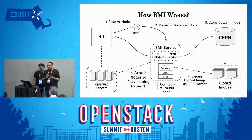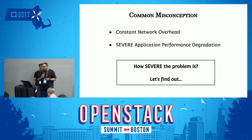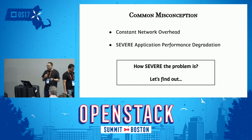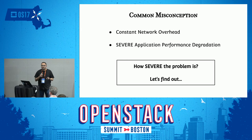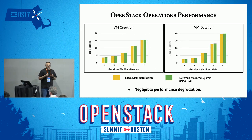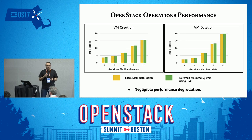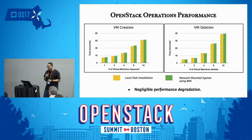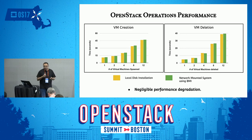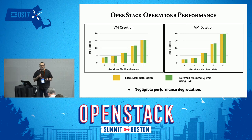Since BMI is based on network booting, a question we often get is whether the network-mounted storage creates constant network overhead that hurts application performance. We performed experiments and found that the performance degradation is almost negligible. We tested with OpenStack operations, database servers, big data applications, and high-performance computing applications, and saw similar results. This is because in today's commodity data centers the network infrastructure has improved a lot — we commonly use 10-gigabit network interface cards and the backend storage is really fast.